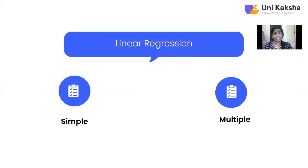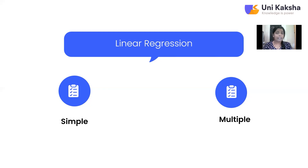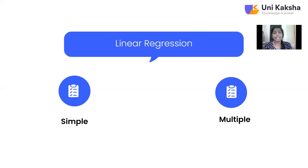Whenever it comes to linear regression, there are two types: simple linear regression and multiple linear regression. In simple linear regression, we are given one input and one output variable. In multiple linear regression, we have one output and multiple input variables. For example, predicting house prices using just square feet is simple linear regression, while predicting house prices using square feet, number of rooms, distance from stations, and amenities is multiple linear regression. Multiple linear regression is going to give you more accurate answers because you have more data, and machines learn better when provided with more data in terms of both rows and columns.